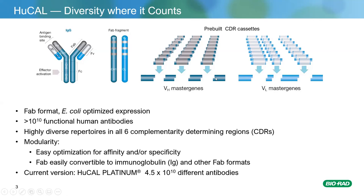Looking at the gene level, we have seven variable heavy master gene frameworks encoding the variable region of the heavy chain, and six variable light master genes encoding the variable region of the light chain. This gives us 42 framework combinations, covering about 95% of antibody diversity seen in humans. At the gene level, we have restriction sites at the CDR boundaries — CDRs are complementarity determining regions encoding the hypervariable binding loops that give antibodies their specificity. We have a system of pre-built CDR cassettes.